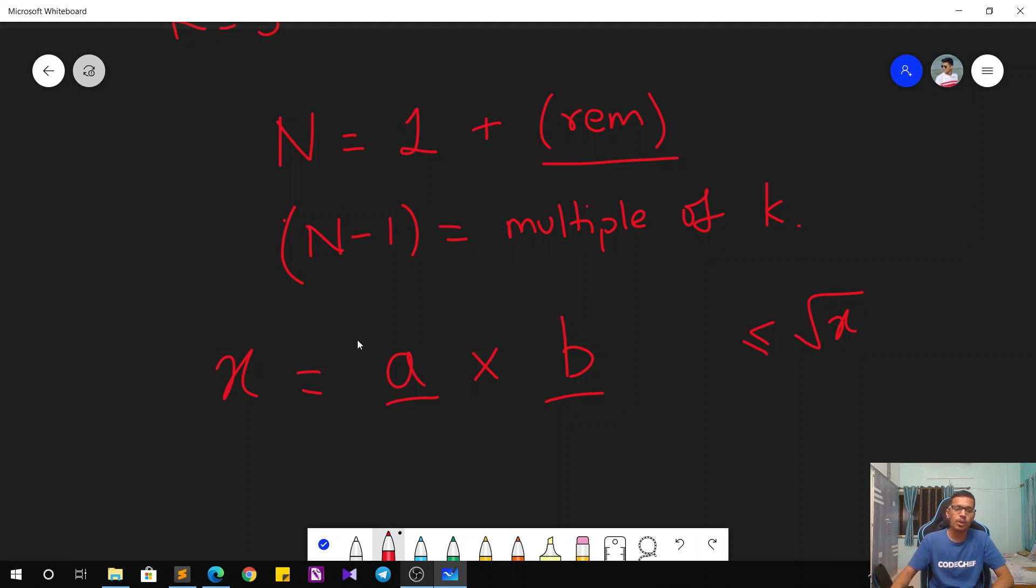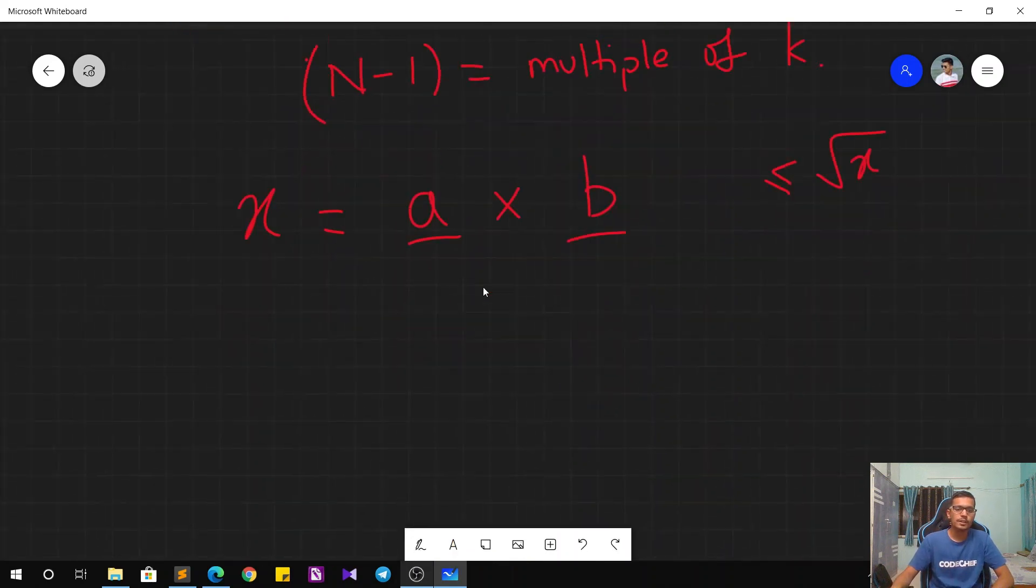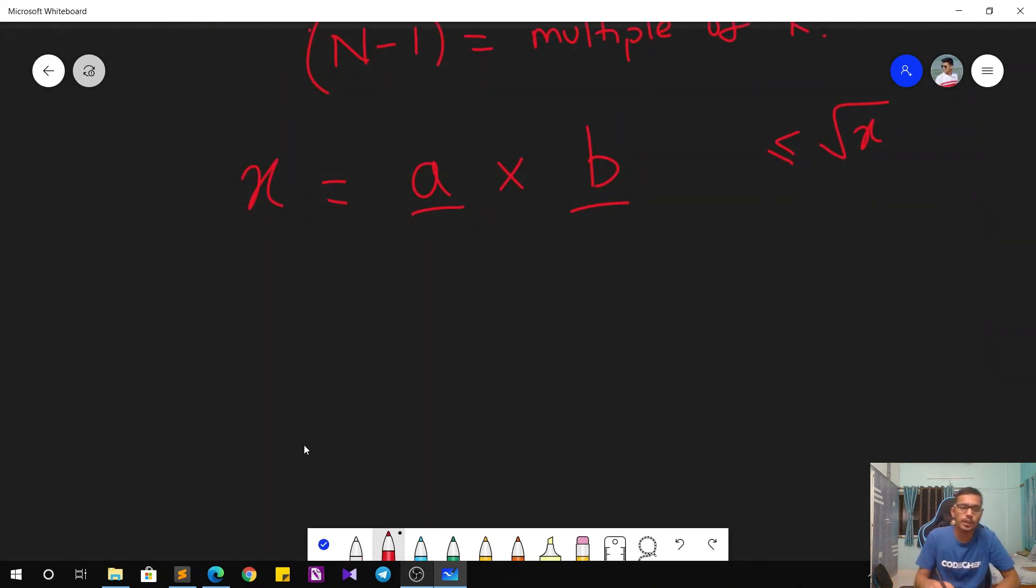Why? Because we can argue that the number X can be represented as square root of X times square root of X. If the first number goes up, then definitely the other number must go down. So at all possible times we have at least one number which is less than or equal to square root X. How does that help us?